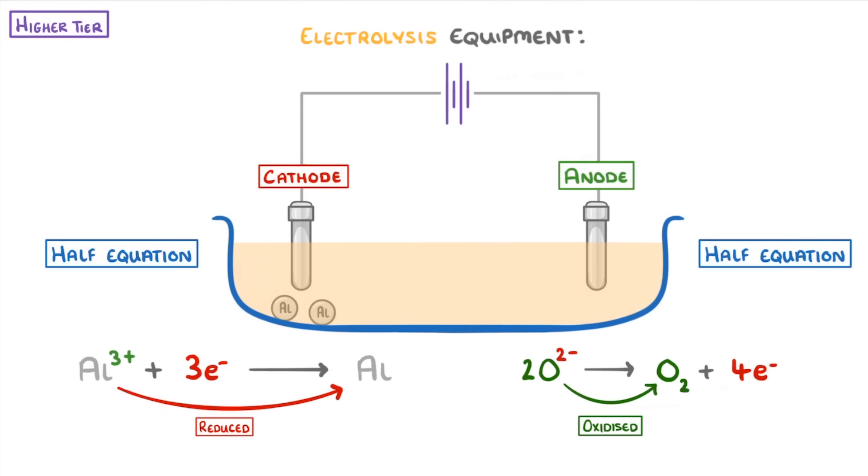If you ever can't remember which is which, just remember the mnemonic OIL RIG, which tells us that oxidation is loss of electrons, and reduction is gain of electrons.